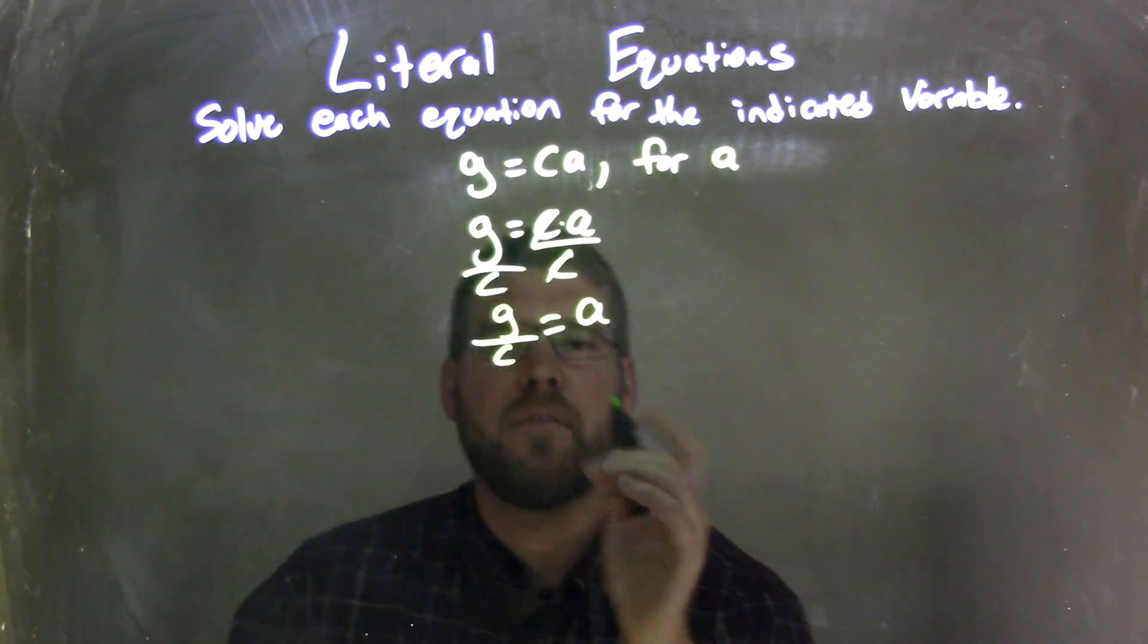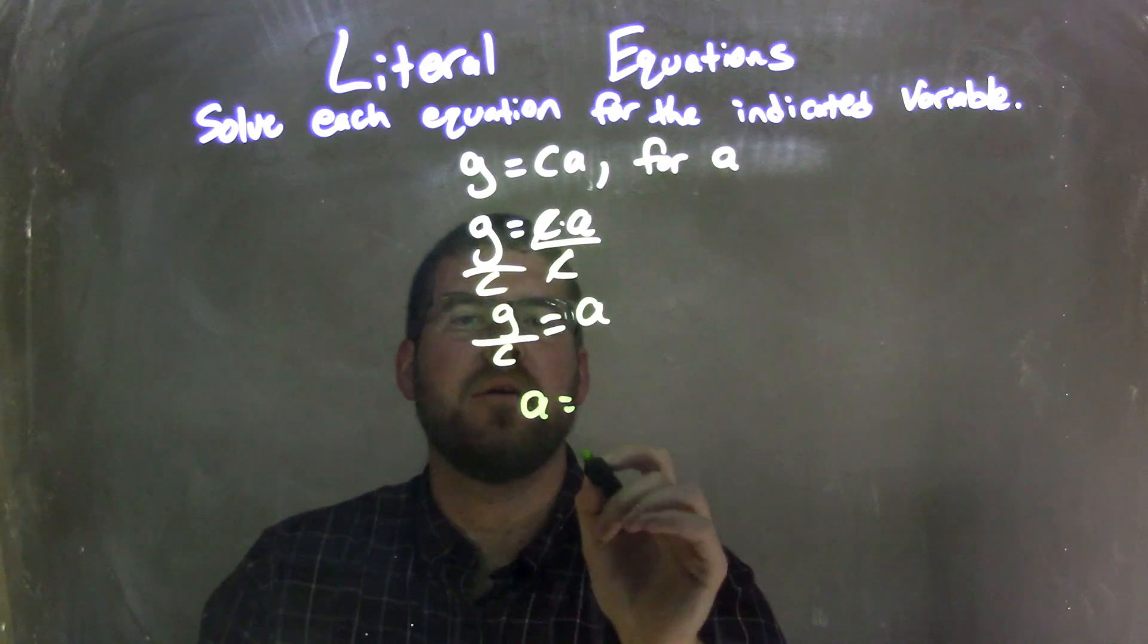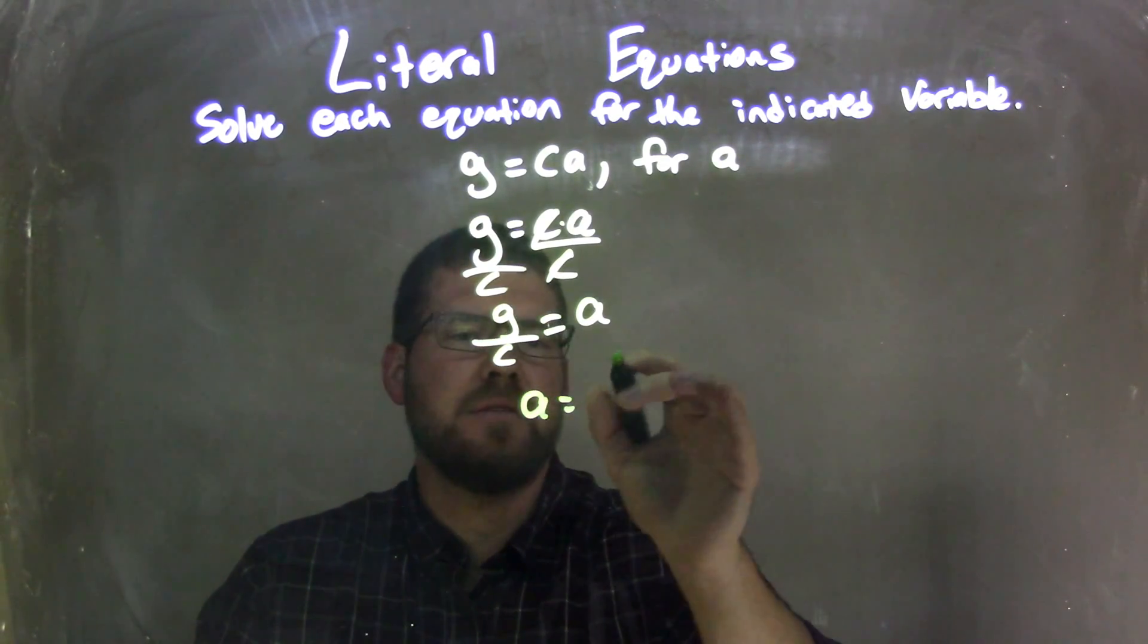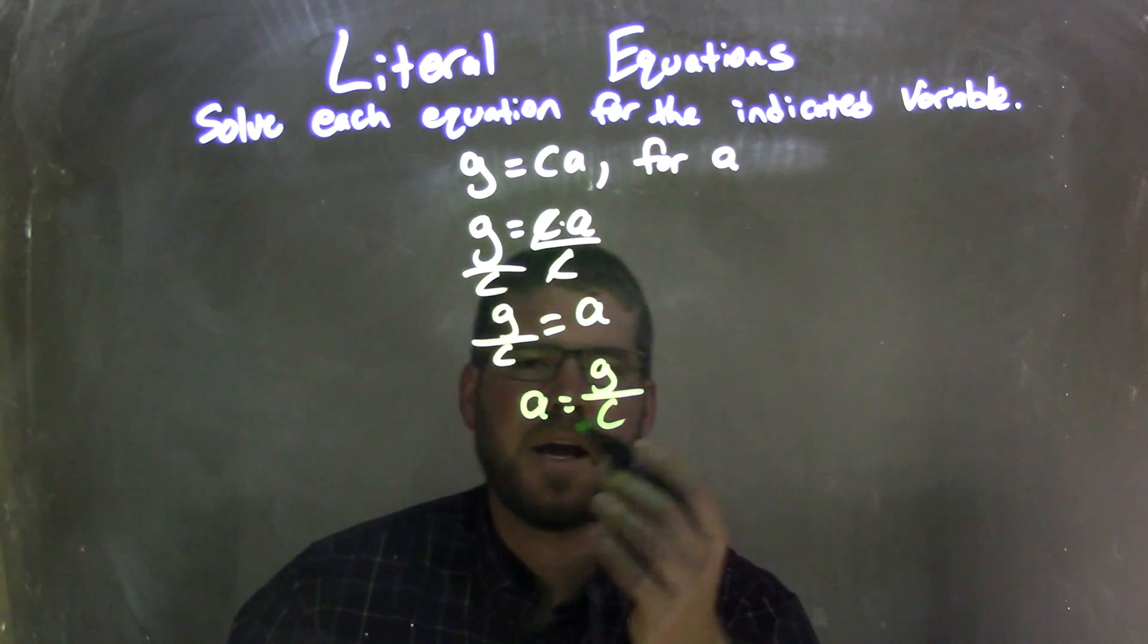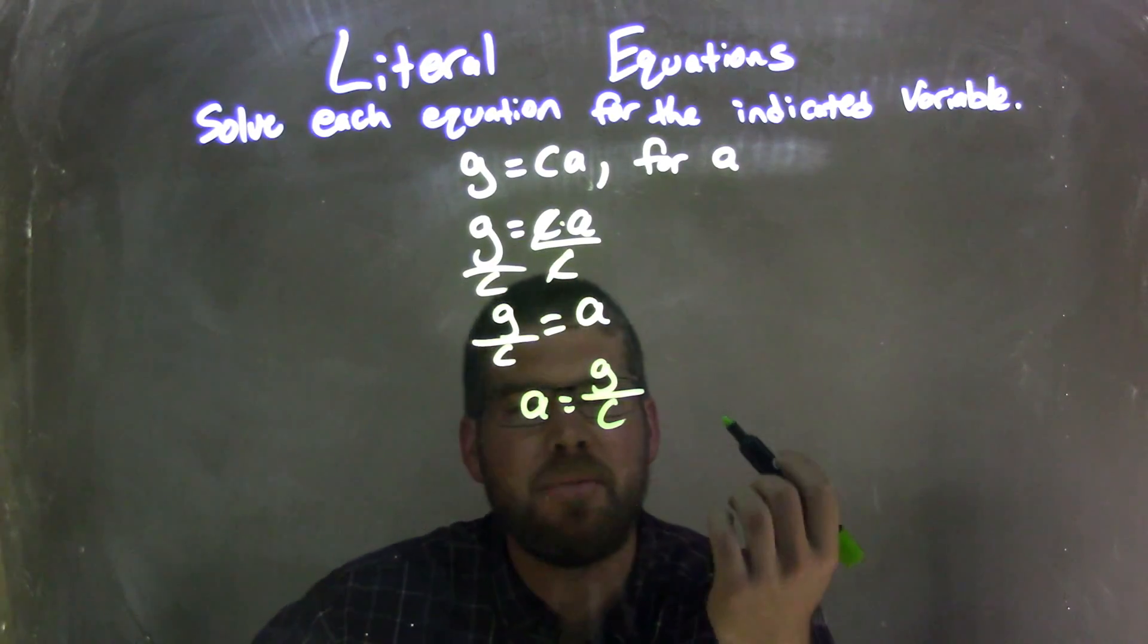I can rewrite this to have A come first, so I put the A first here, and I'm left with G over C. I'm going to put that on the right. It's the same thing, just A coming first. It looks nicer, and now I have my final answer.